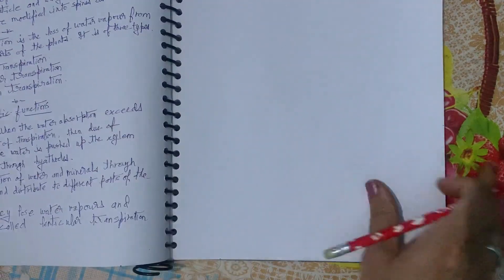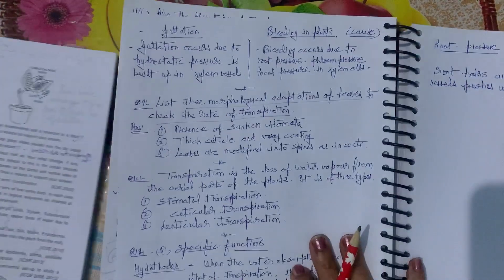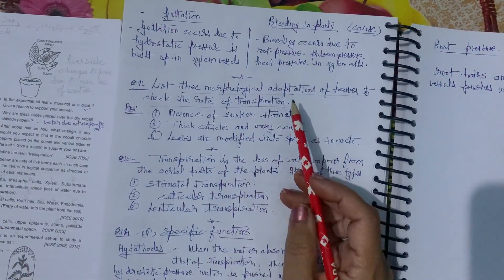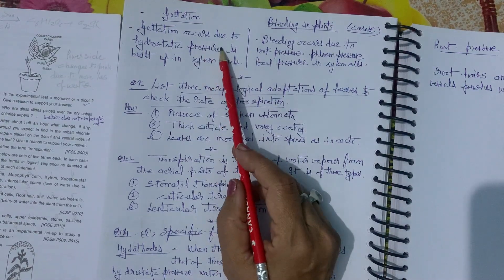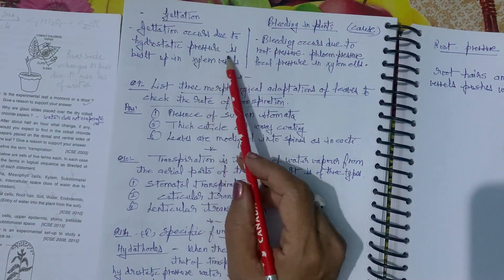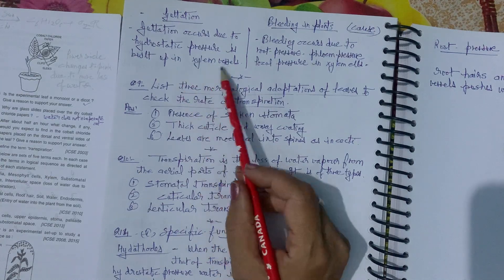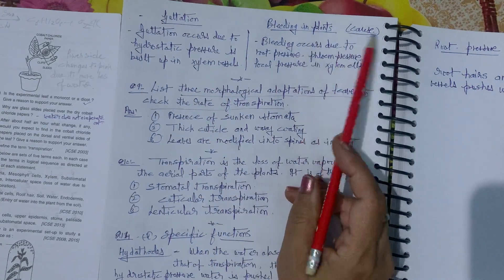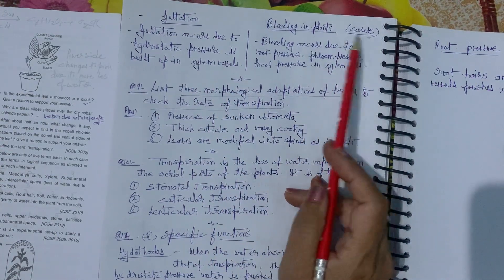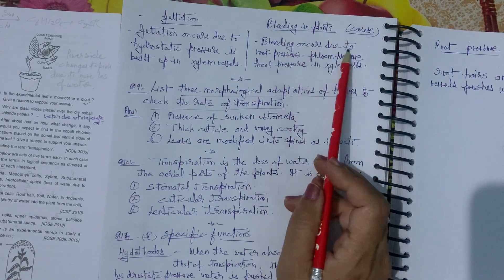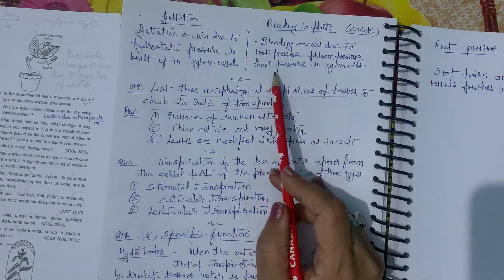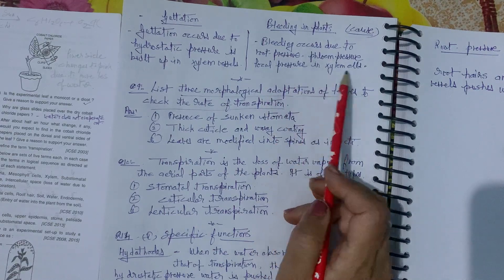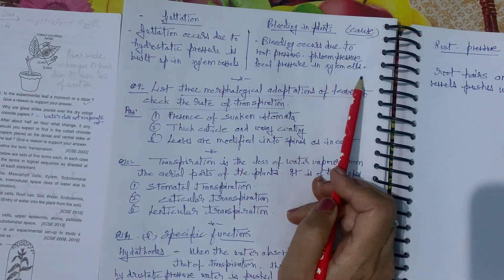Guttation vs. bleeding in plants: guttation occurs due to hydrostatic pressure built up in the xylem cells. Bleeding occurs due to root pressure, phloem pressure, or local pressure in xylem cells.